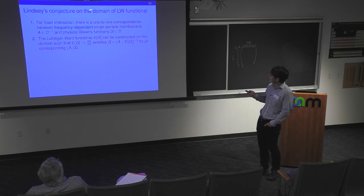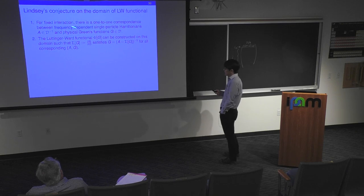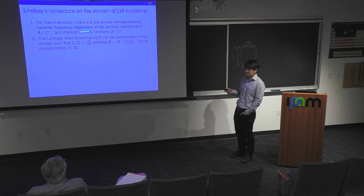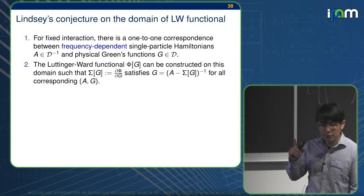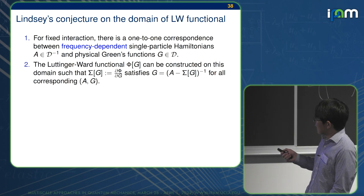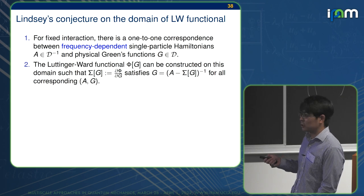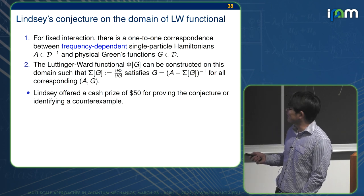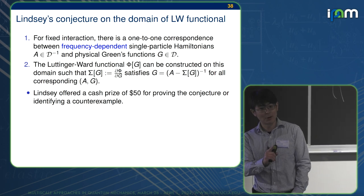Let me end this talk with the thing that already showed up in the tutorial week, which is Michael Lindsay made the following conjecture on the domain of the Luttinger-Ward functional. There are two parts. The first is that for fixed interaction, there is a one-to-one correspondence between the frequency-dependent single particle Hamiltonian, which is in that set, and the physical Green's function g in this set. That's the first part. The second part is that the Luttinger-Ward functional, phi g, can be constructed on this domain such that all the expected things hold for all corresponding a and g. On the spot, he offered the cash prize of $50 to anyone who can prove the conjecture or coming up with a counter example.